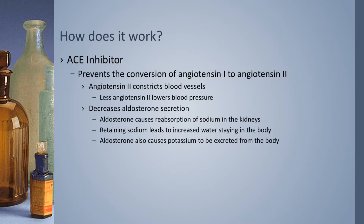So if you block the production of angiotensin 2, you can effectively lower your blood pressure. Angiotensin 2 also stimulates the release of the hormone aldosterone, and aldosterone causes you to retain more sodium and water, which can increase your blood pressure. So again, by blocking angiotensin 2, you decrease the release of aldosterone, in turn allowing more sodium and fluids to leave your body and lowering blood pressure. And this is also one of the reasons that it is used for heart failure.